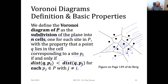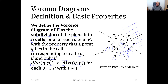A student asks: can the distances between Q and two different sites be equal? The answer is yes — only if Q is on an edge between two cells. In that case the distances are equal. And on a vertex, the distance to three Voronoi sites will be equal, forming a kind of circle. We will discuss these properties in upcoming slides and use them to compute the whole Voronoi diagram.